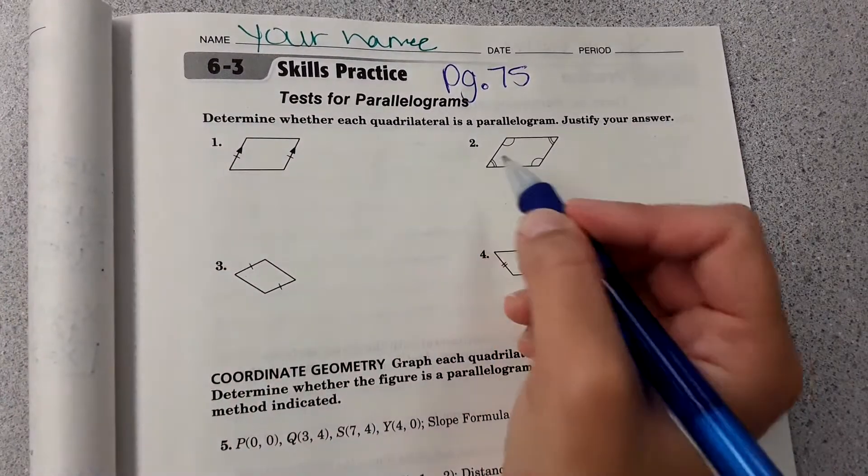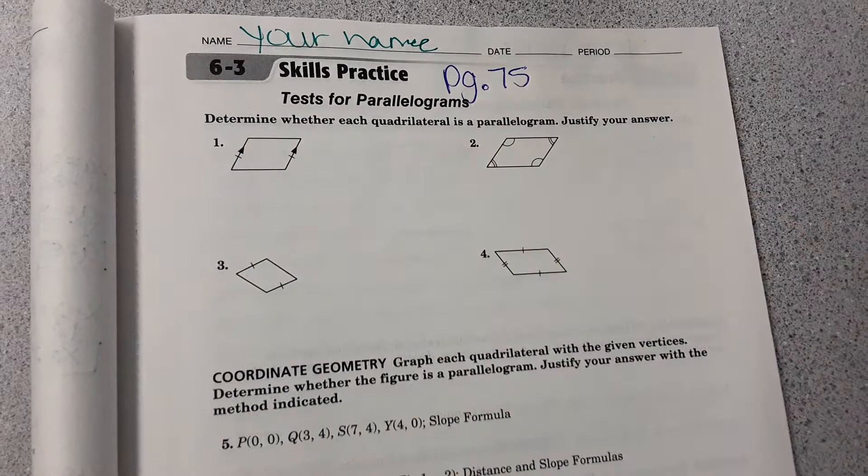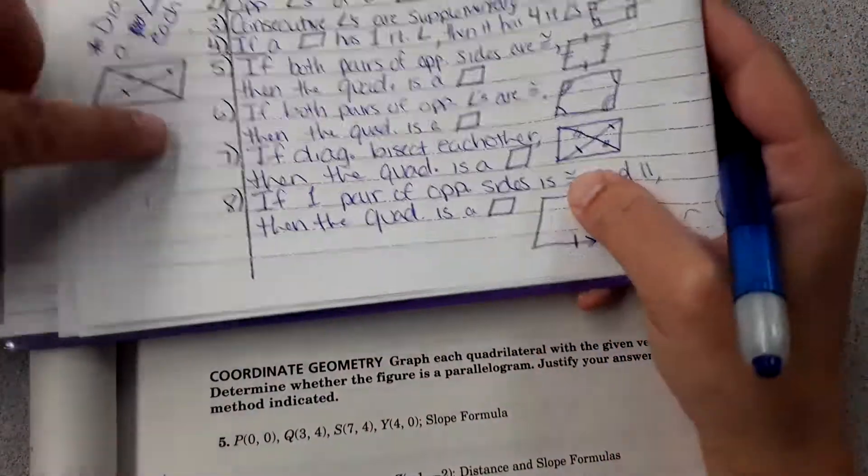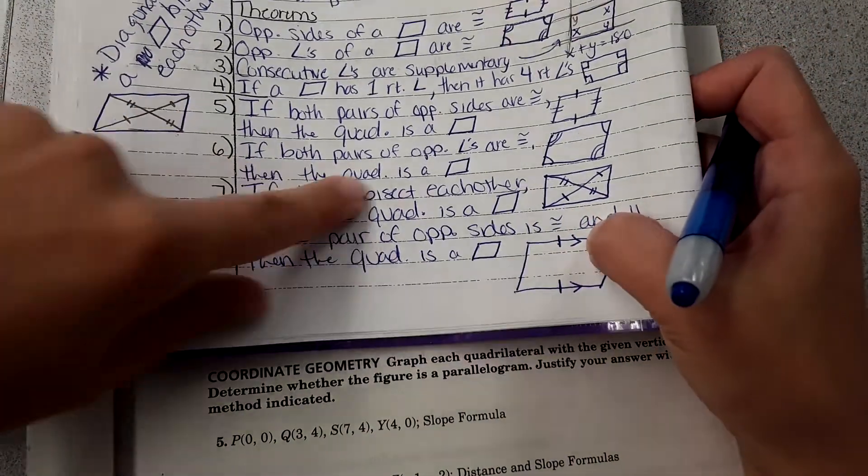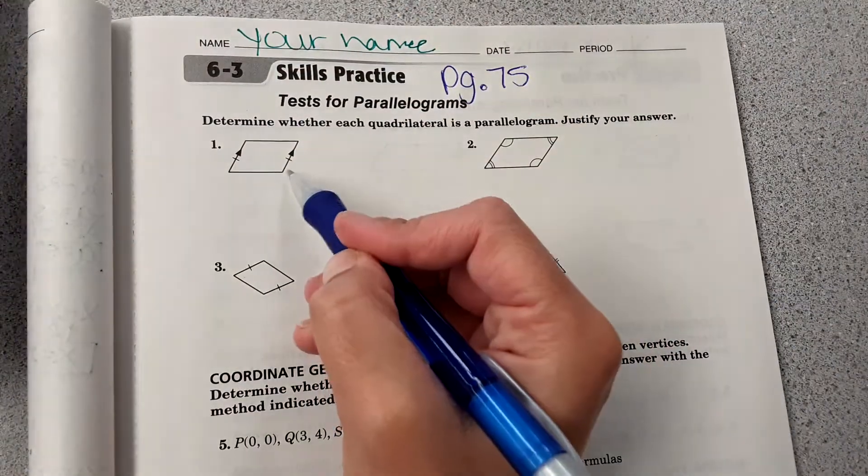This one says determine whether each quadrilateral is a parallelogram and justify your answer. So what we're going to do is just try to see if any of these rules apply to the parallelograms they gave us.